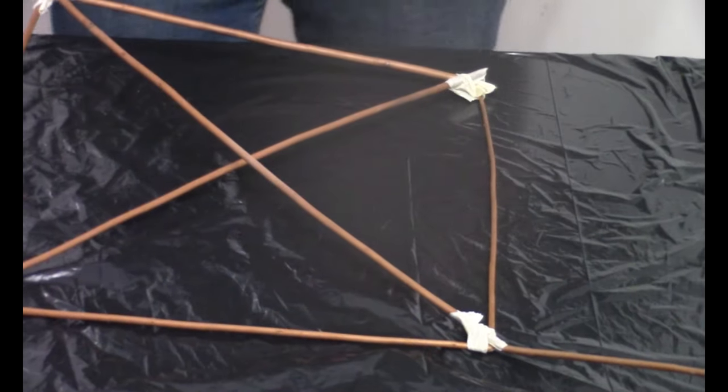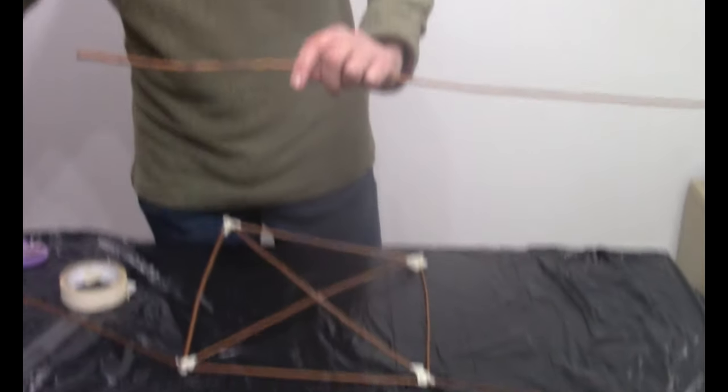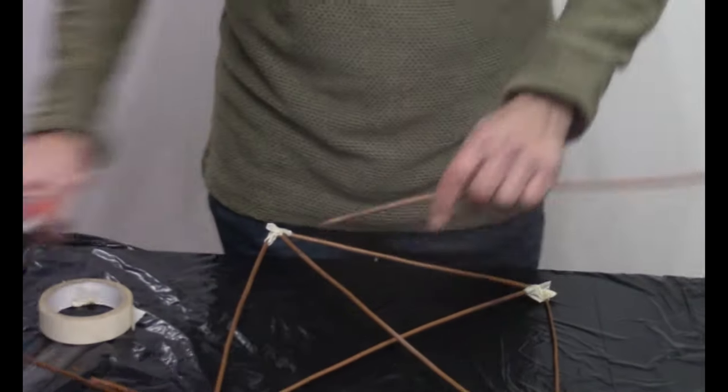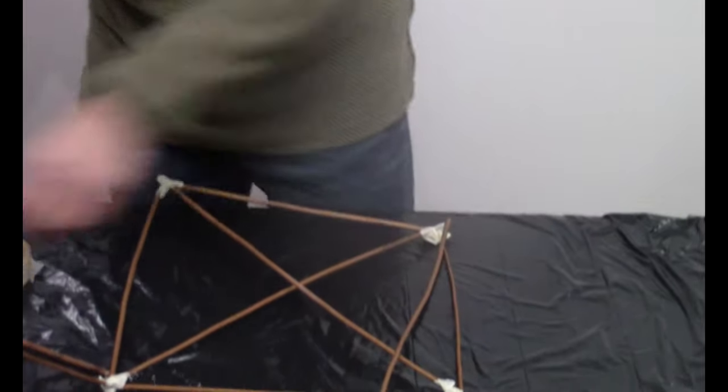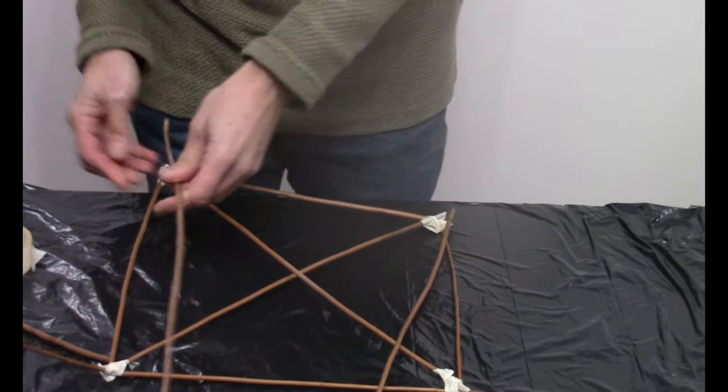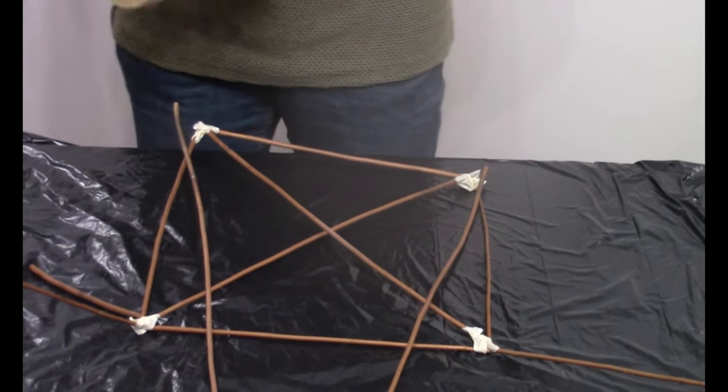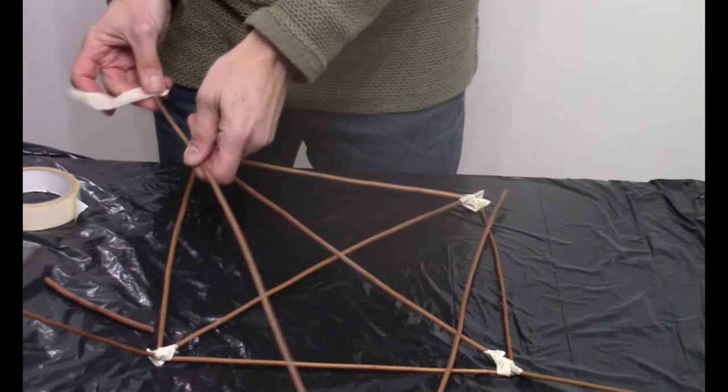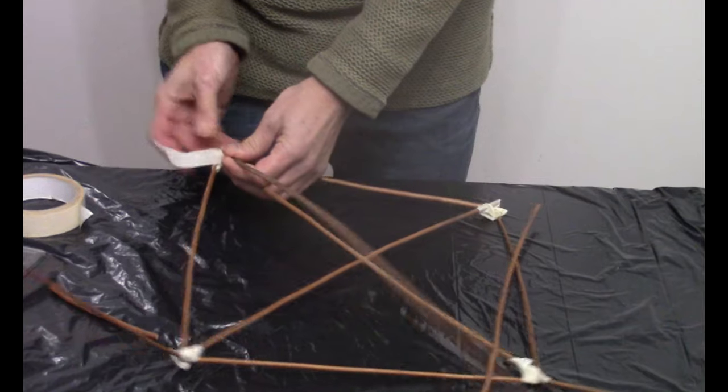Then with the final two corners, we're going to stick, well this is a good example, not a very straight willow. So I'm just going to chop the end off to make that a bit straighter. Then we're going to do that with two of them. We're going to connect these to these corners. Another piece of tape.